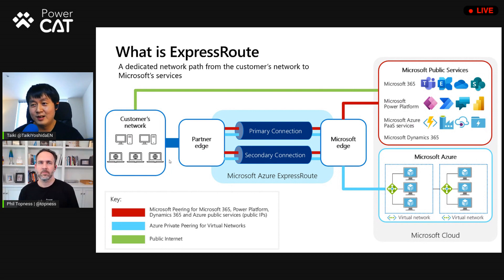That's basically ExpressRoute in a very overview kind of way. If it has fewer hops, does that mean it's faster? Well, kind of yes and no. In terms of having an overhead of different hops, yes, it does get improved because you don't have as many hops. But if you're talking about download speeds or upload speeds, that really depends on your network equipment and also on how much contract you've made with Microsoft in terms of network speed of the ExpressRoute.